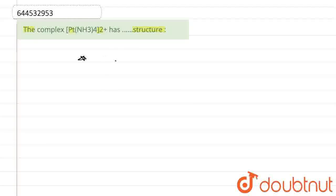Let's rewrite this complex: [Pt(NH3)4]2+. If we talk about this, it illustrates square planar geometry.